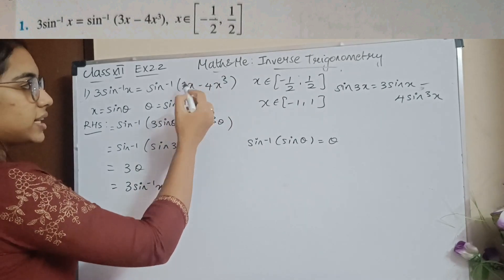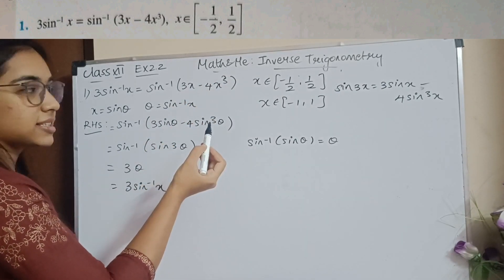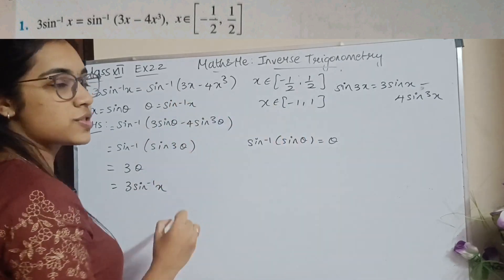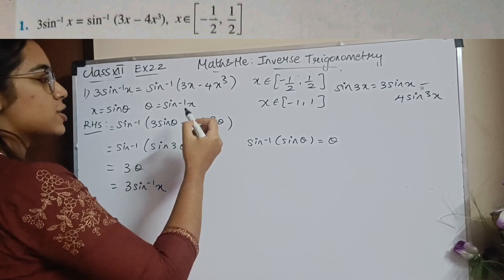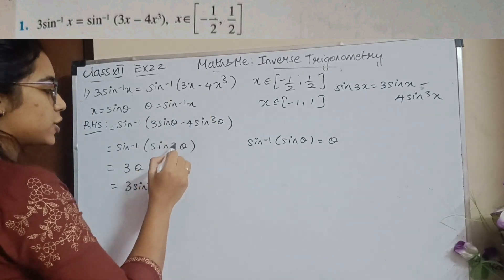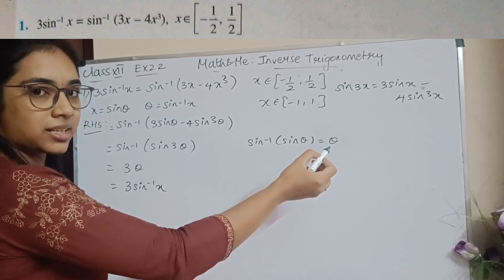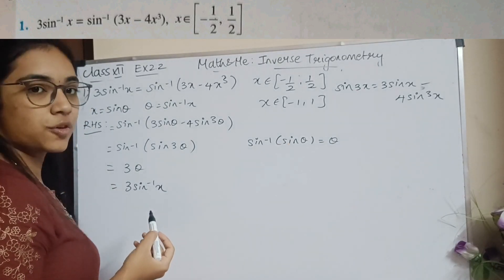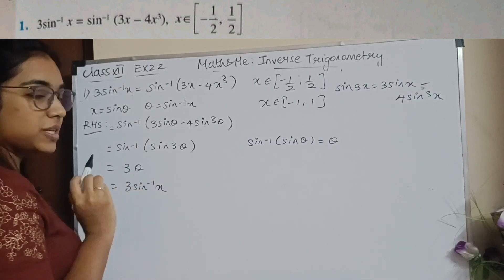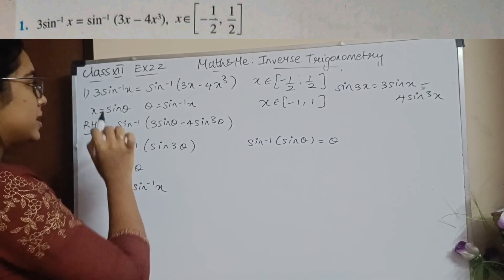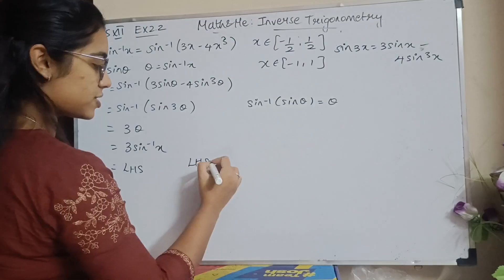So you know that 3x - 4x³ = sin(3x). When you substitute x = sinθ, you know that 3sinθ - 4sin³θ = sin(3θ). Making the appropriate substitution gives sin⁻¹(sin3θ) = 3θ = 3sin⁻¹(x), which equals the LHS. Hence LHS = RHS, proved.